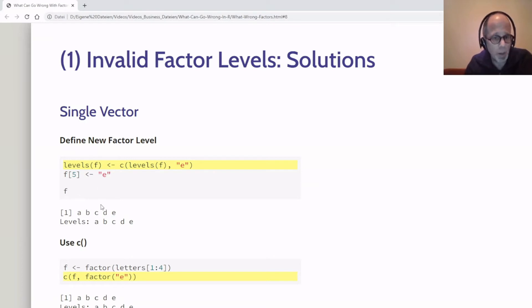Another solution that's simpler is just to use the C function, concatenate. I use the same factor as before with letters A, B, C, D and use the C function to add element E, but note this element E is defined as a factor. We'll get back to that in a later example. I add the element E defined as a factor and get the same result A, B, C, D, E—no warning, no NA, just valid data using the C function or pre-defining the levels. These are the two solutions for a single vector.